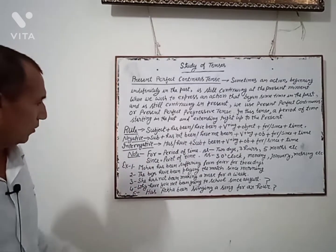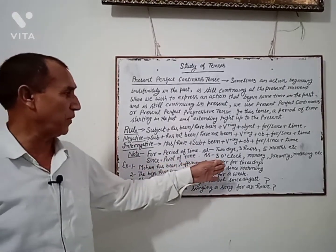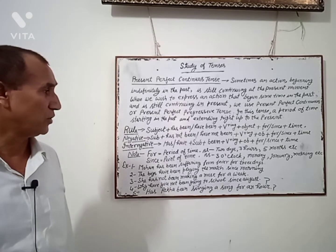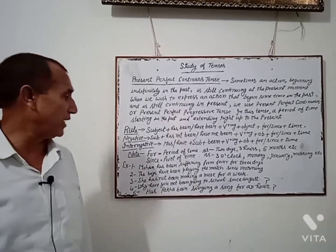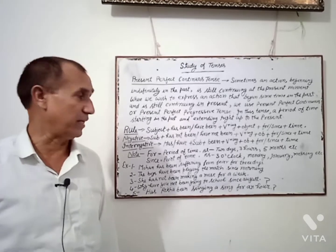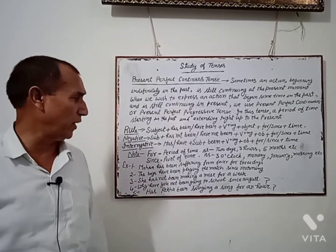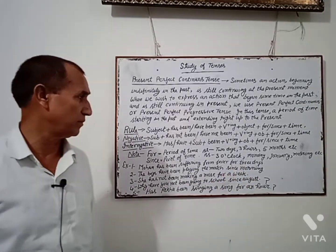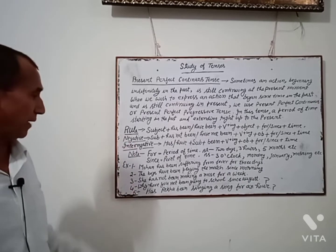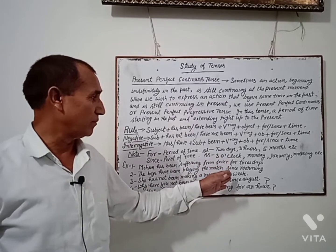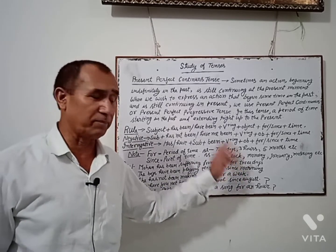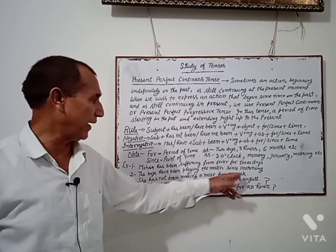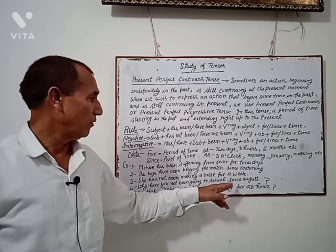For example: Mohan has been suffering from fever for 3 days. The boys have been playing the match since morning. She has not been making a noise for a week. Why have you not been going to school since August? Has Rekha been singing a song for an hour? In these examples, time is given at the end of the sentence: for 3 days, since morning, for a week, since August, for an hour.